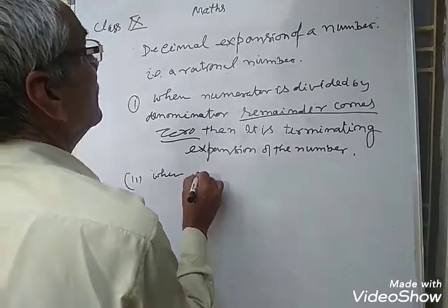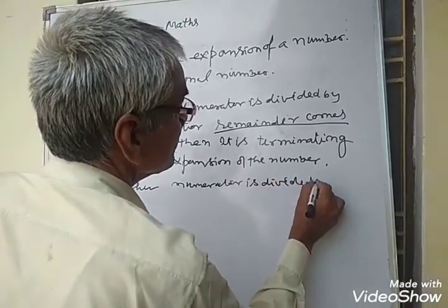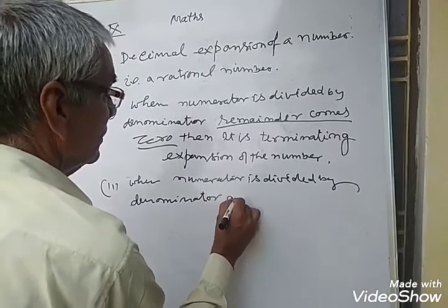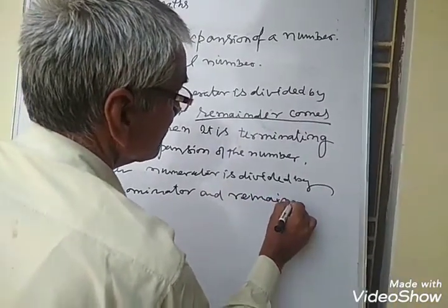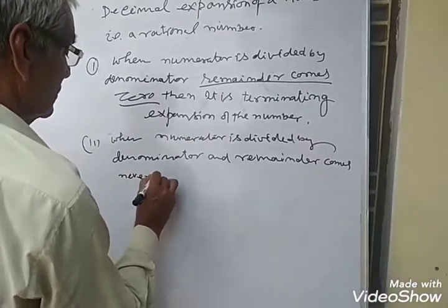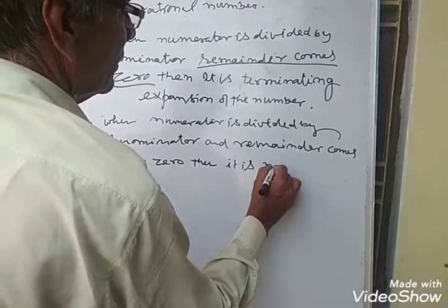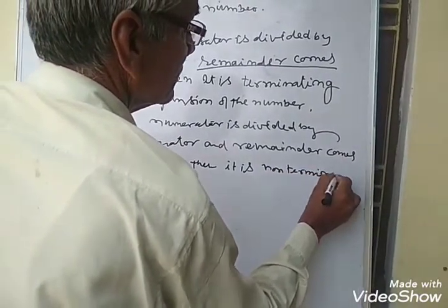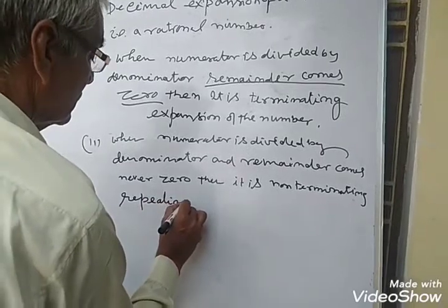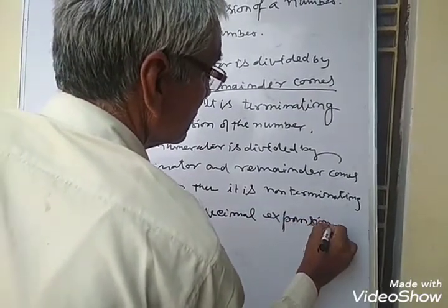Second condition: when numerator is divided by denominator and the remainder never comes to 0, then it is a non-terminating repeating decimal expansion of the number.